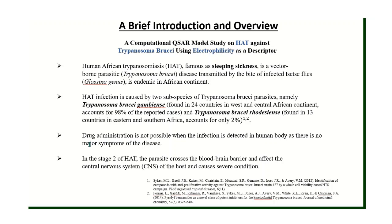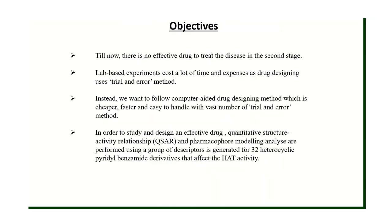The problem is that at stage one, the infection cannot be detected or shows no symptoms, so drug administration is possible. But at stage two, the parasite crosses the blood-brain barrier and affects the central nervous system, causing severe conditions — and at that stage, drug administration is not possible as no such drugs exist on the market. To treat stage two disease, we used computer-aided drug designing, which is cheaper, faster, easier to handle, and can perform many trial-and-error iterations with greater efficiency.